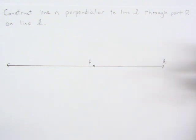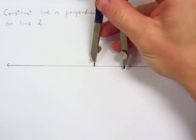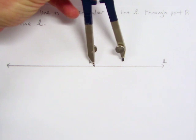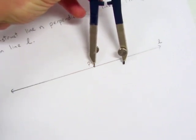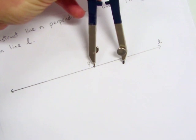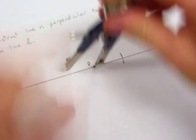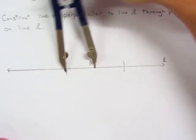So the first thing you want to do is open up your compass to any measure and put the point of your compass on point P. And now we want to draw an arc that intersects line L in two places. So we can intersect here and you can continue this arc all the way around or you can just spin it around and make it right there.